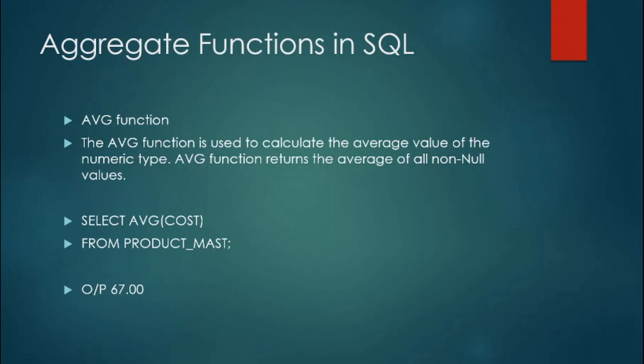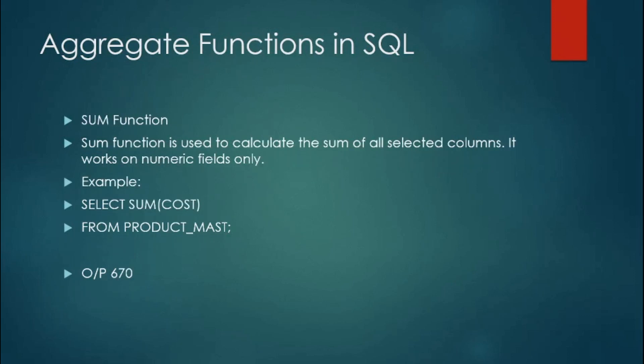Another is the SUM function. What it exactly does is calculate the sum of all the selected column values, and it only works on numeric fields. For example, if I want to calculate the total cost of products in the product_masked table, I write: SELECT SUM(cost) FROM product_masked. You can see it has calculated a total amount of 670 rupees.